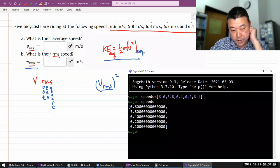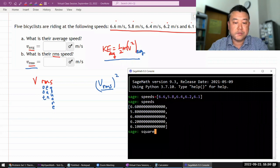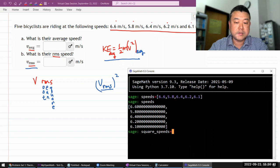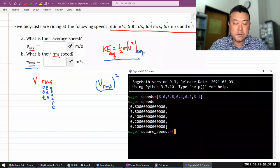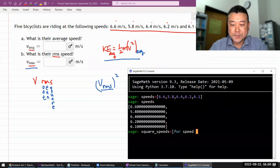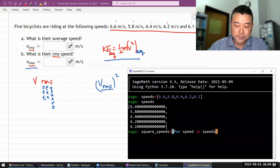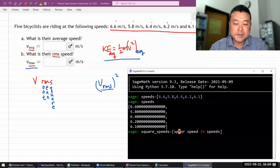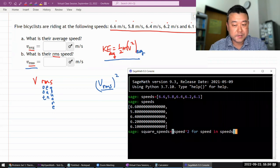So I could do it more efficiently, but let me just do it the slow way. So I can do squared speed is, let me see if I remember the syntax. So for speed in speeds, yeah, okay, I'm beginning to remember my Python. So speed squared for speed in speeds.